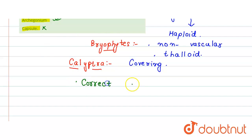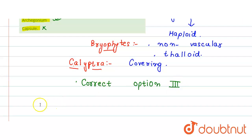So the correct option is option number three, which is archegonium. I hope your doubt is clear now. Thank you.